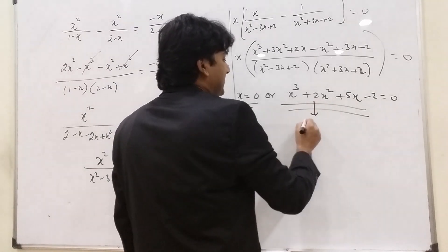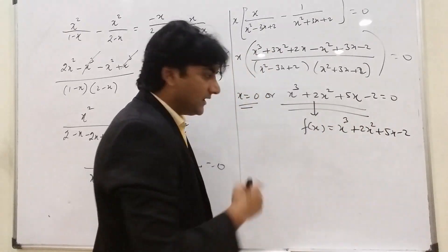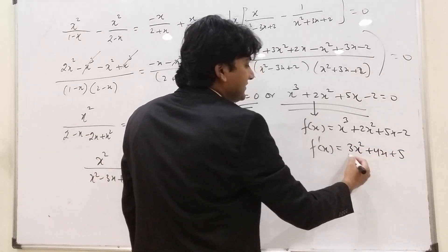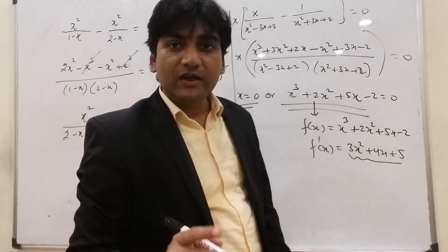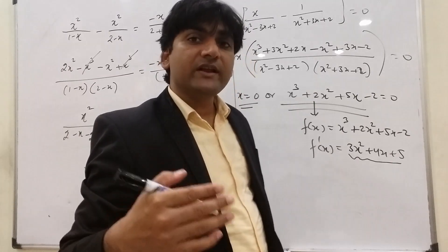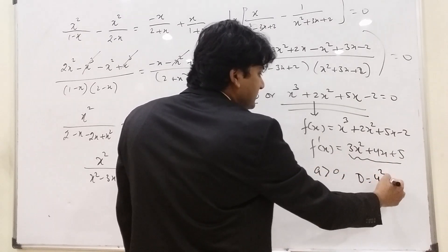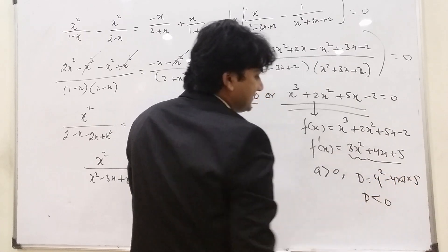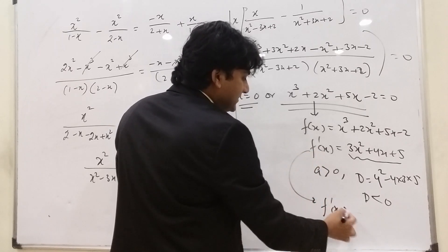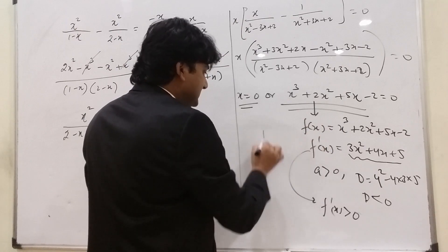Let f(x) = x³ + 2x² + 5x − 2. Differentiating: f'(x) = 3x² + 4x + 5. This is a quadratic with a = 3 > 0. The discriminant D = 4² − 4(3)(5) = 16 − 60 < 0. Since a is positive and D is negative, f'(x) is always positive, meaning f(x) is strictly increasing.